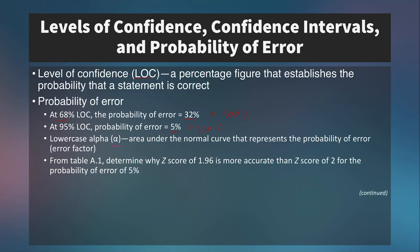Using a z-table, we can determine why the z-score of 1.96 is more accurate than using a z-score of 2 for a 5% probability of error. On a normal curve, going out exactly 2 standard deviations above and below the mean goes slightly too far, and pulling back to 1.96 corresponds with 2.5% in each of the tails — so 2.5% and 2.5%, with 95% in the middle.